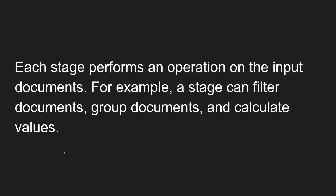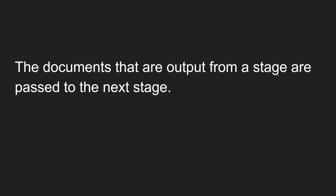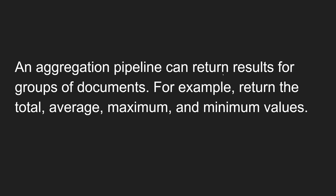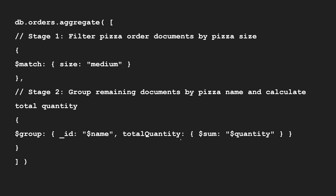As documents go through all these steps, they are filtered along the way. The documents output from one stage are passed to the next stage. Stage one gives you an output which is sent as input to the next stage, and stage two's output goes to the third stage, and so on through the series of stages. Finally, you get the output. An aggregation pipeline can return results such as total, average, maximum, and minimum values for groups of documents.